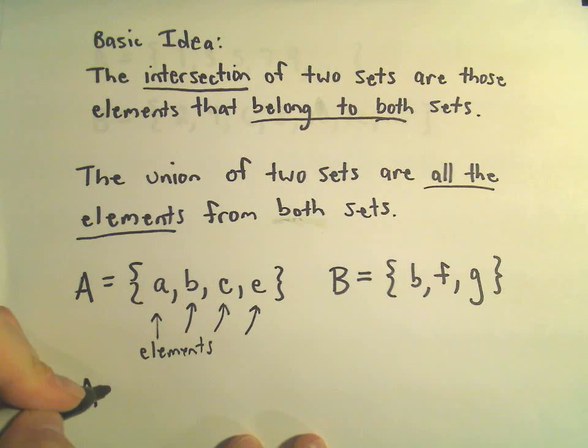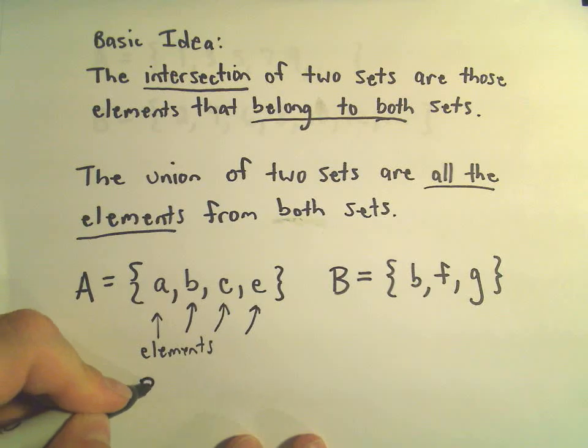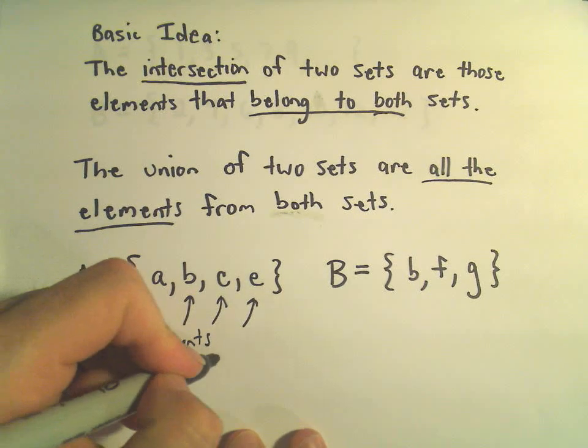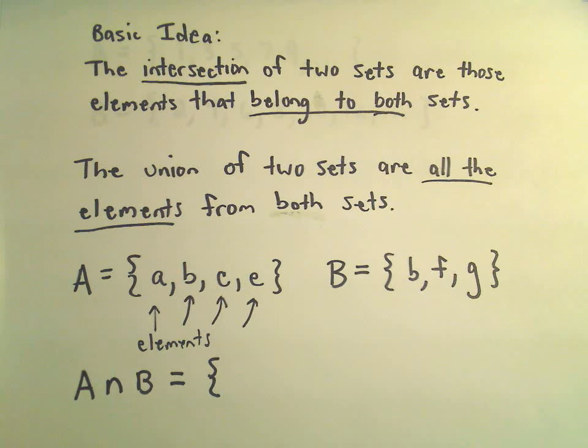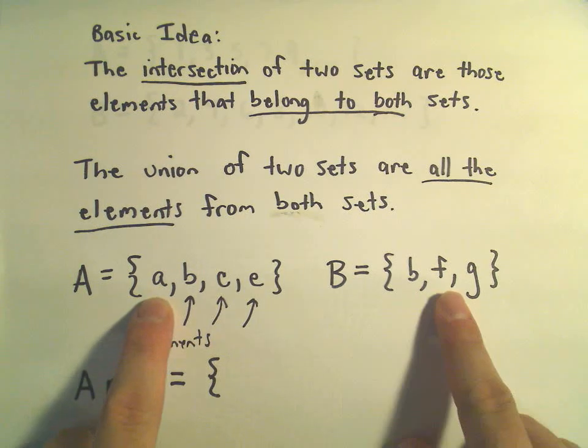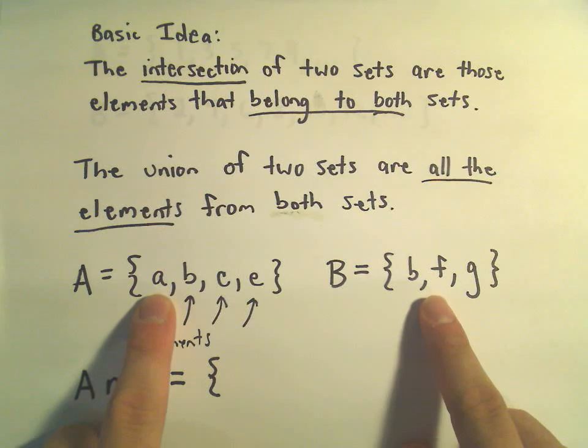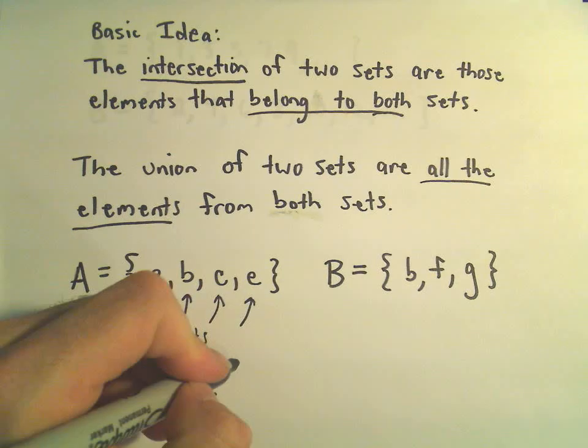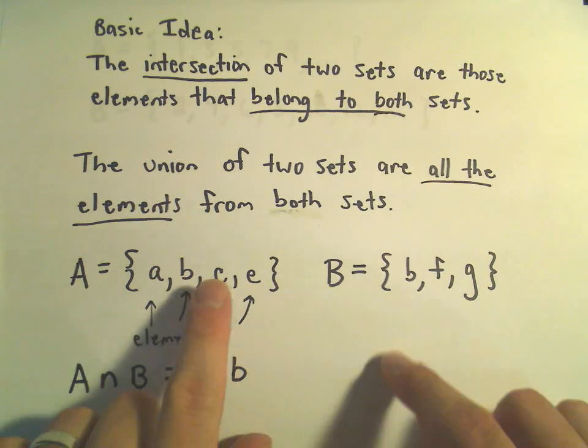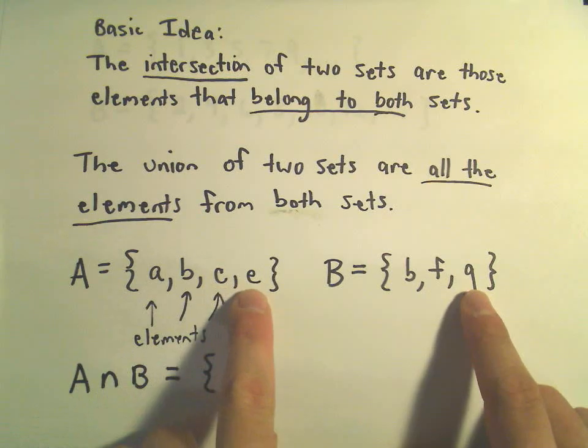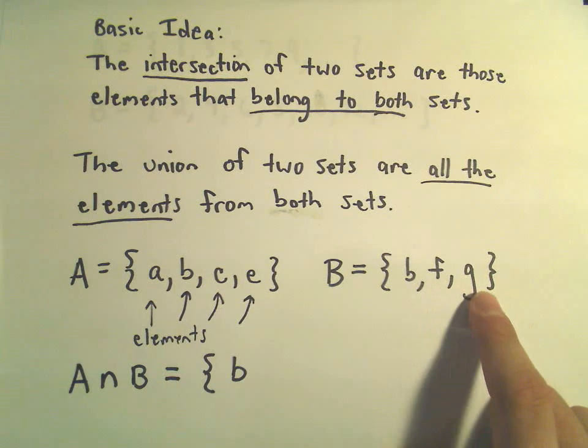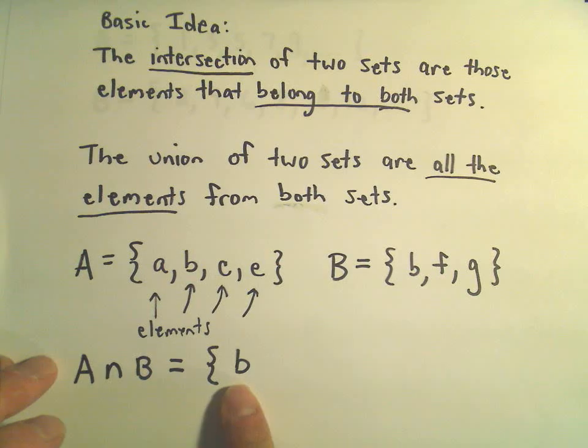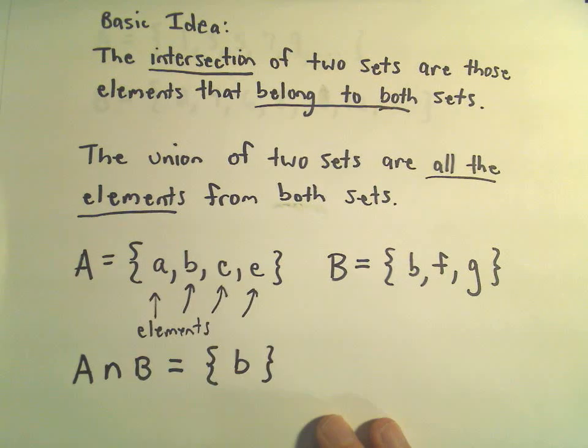If we find the intersection, so A intersect B, that's simply going to be the set of elements that are in common, the ones that belong to both sets. Is element A going to be in the intersection? It has to belong to both sets, and A definitely doesn't belong to both sets. Element B, though, does belong to both sets, so we would list that element in there, and I think that's the only one. Element C doesn't belong to both sets, element E doesn't, neither does F nor G. So, the intersection of these two sets would simply be the single element B.